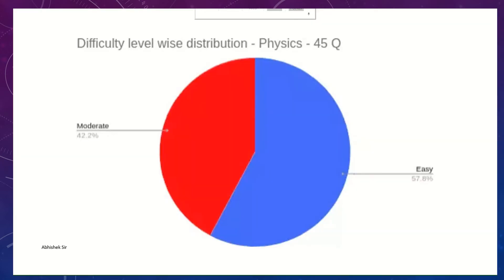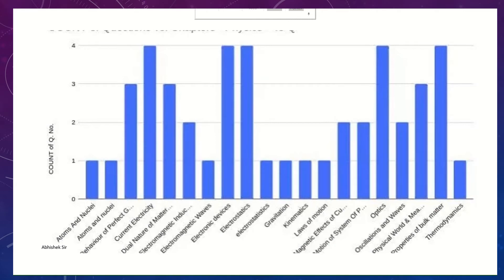If you look at difficulty ratio, easy is 57.8% easy question and moderate is 42.2%. In addition, there was only one question that was tough or difficult. I have given average in front of you. You can see different chapters here. I will give you detailed analysis of this.